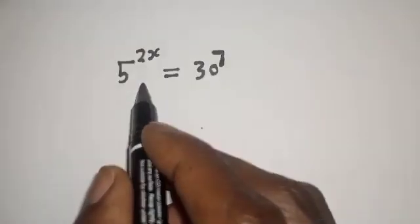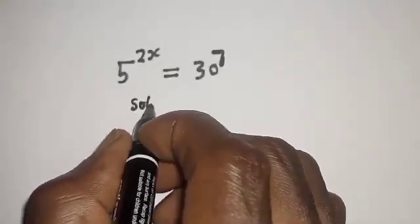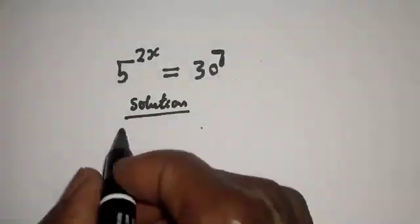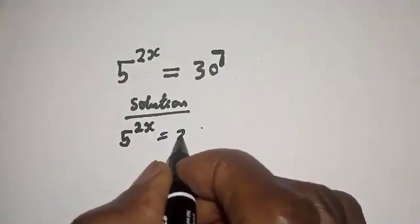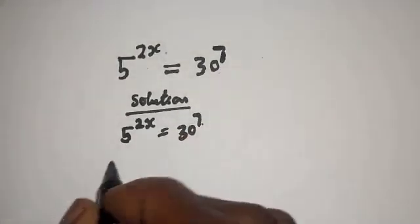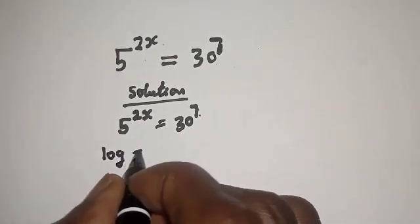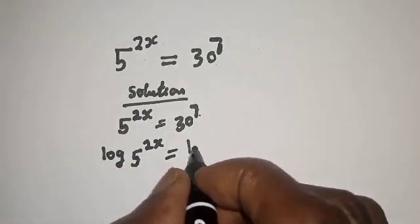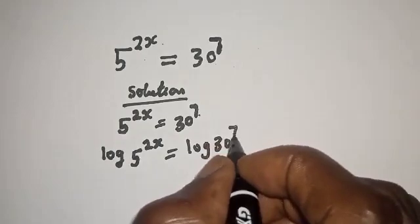Before we proceed, please don't forget to like, share, comment and subscribe. Solution: we have 5 raised to power 2s is equal to 30 raised to power 7. Let's take the log of both sides — log of 5 raised to power 2s is equal to log of 30 raised to power 7.